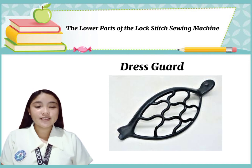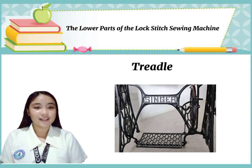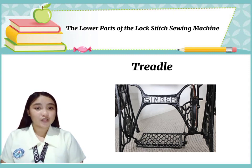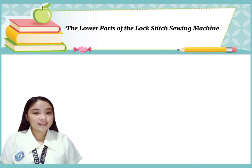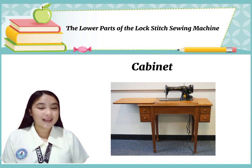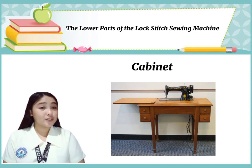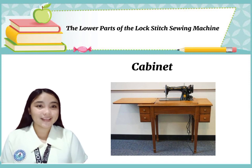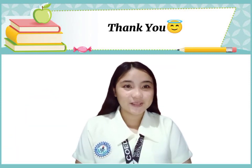Sixth, dress guard — protects the threads from the wheel. Seventh, treadle — it is where the feet are stationed to drive the band wheel through the pitman rod. Eighth, legs — support the cabinet of the machine. Last, cabinet — holds the head of the machine by interlocking screw on the hinge. And that's all. Thank you.